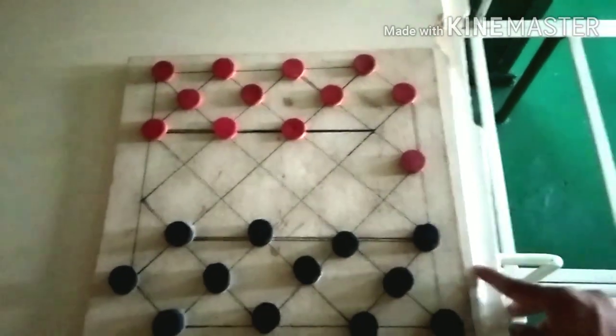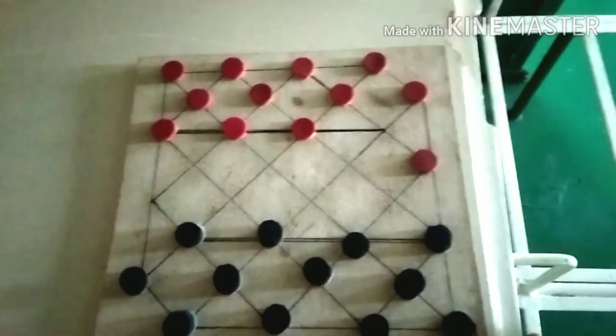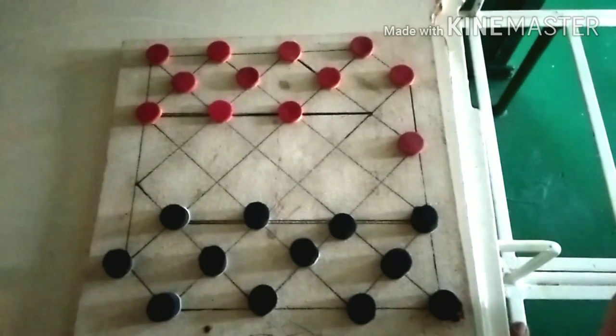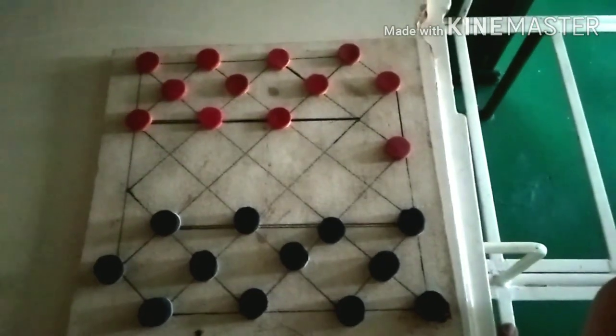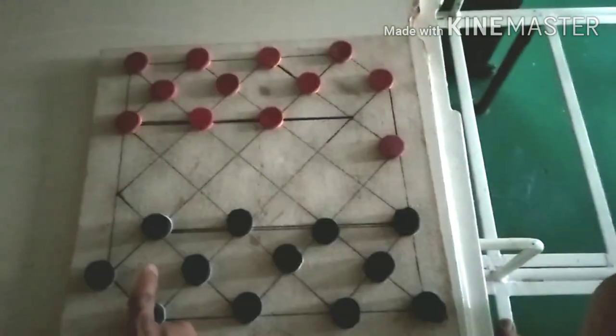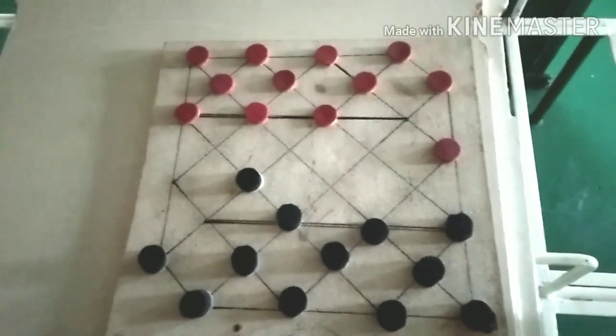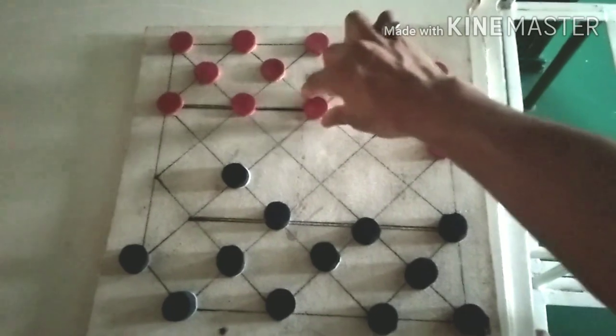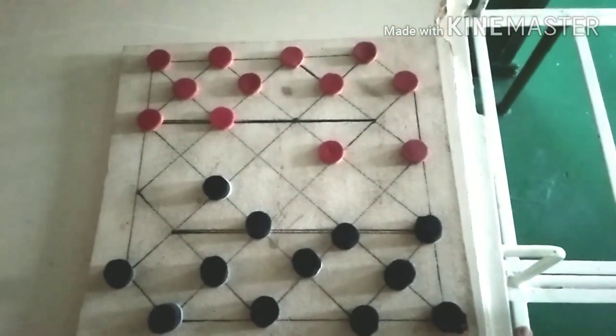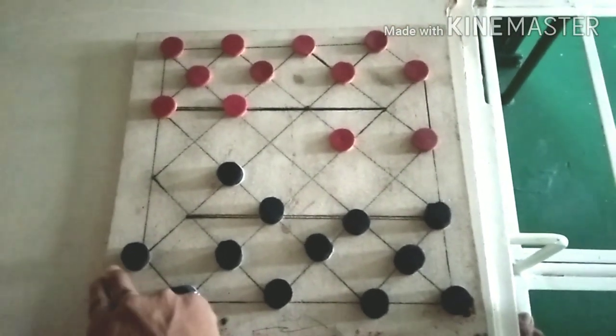Yung ibang moves laging dito ang moves. Next, yung black. Dapat dito tayo mag moves. Tapos ang red naman, tulak yung red dito. Dito pa rin yung move sa black.